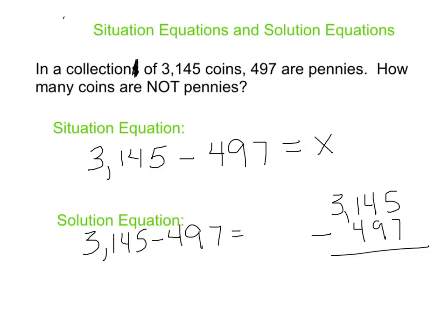And I get to have some fun here with grouping and ungrouping. Good times. And then we can get down to business. And in the solution equation, instead of an x, we're certainly going to have our 2,648.